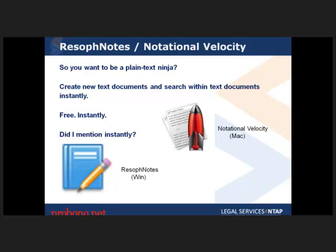If you're convinced plain text is the way to go but have hundreds of plain text files in one directory, how do you navigate and find what you need without creating folders for everything? There are two applications: Resoft Notes for Windows and Notational Velocity for Mac — both pretty much the same, with Resoft Notes being a clone of Notational Velocity. You point it at a folder containing all your plain text notes. It has a simple three-pane interface: a search bar, a file listing, and a content window.